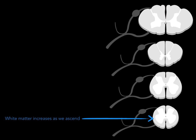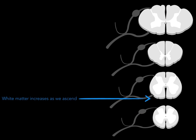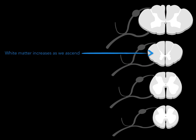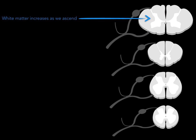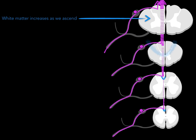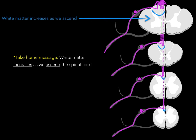White matter increases as we ascend up the spinal cord. There's a little bit at the bottom in the sacral region, a little bit more in the lumbar, a lot more in the thoracic, and then the most in the cervical region. The take-home message: white matter increases as we ascend the spinal cord.